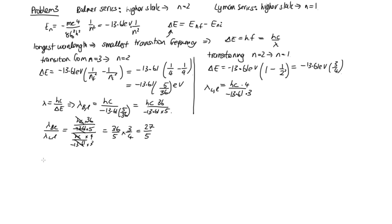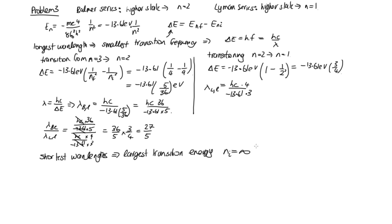For the shortest wavelength, we require the largest transition energy. In both series, this means transitioning from the highest possible — i.e., the infinite (unbound) state — down to n=2 for Balmer and n=1 for Lyman.